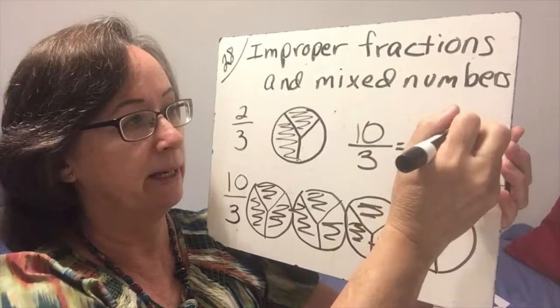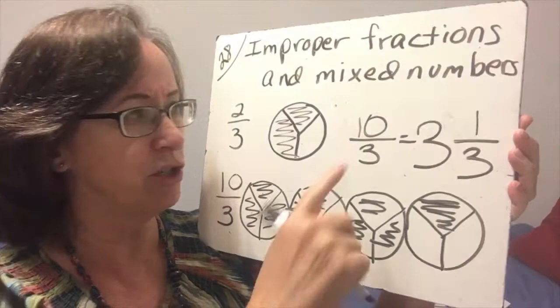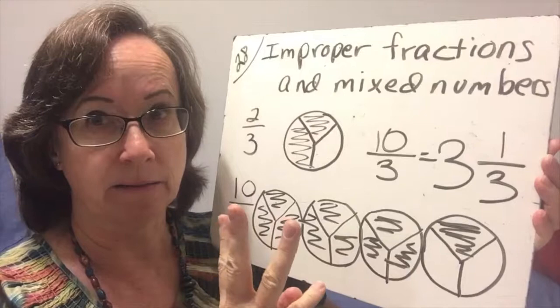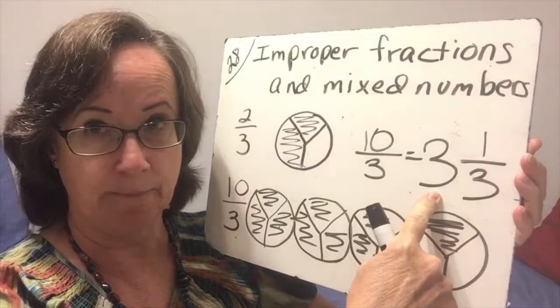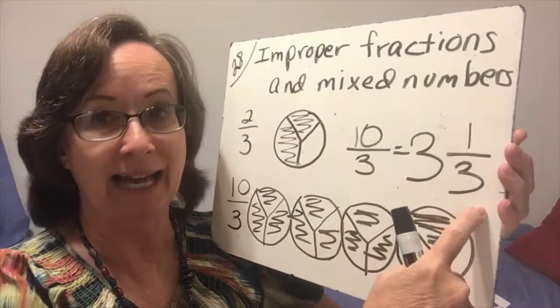So 10 thirds equals 3 holes and 1 third left over. So you say, how can I go from an improper fraction to a mixed number without doing all of that drawing of pictures? So it's very simple. We say 10 divides by 3, 3 times, and that would be 9, right? So we have 3 whole times that 3 will go into 10, and then we have 1 third left over.